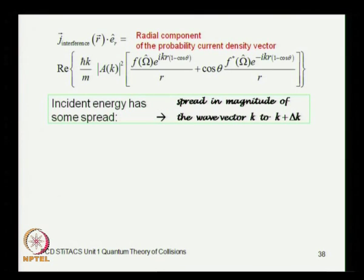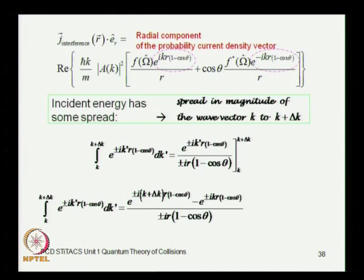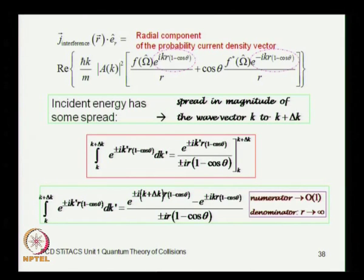The consequence of this is that when you integrate these terms — e to the i·k·r·(1 minus cos θ) and e to the minus i·k·r·(1 minus cos θ) — these will need to be integrated over k. When you do that, this integral has oscillatory terms in the numerator made up of cosine and sine terms, and the denominator has r. In the asymptotic region as r tends to infinity, 1 over r goes to 0. You expect this to vanish except when cos θ equals 1, because then the denominator also goes to 0 and it can blow up.